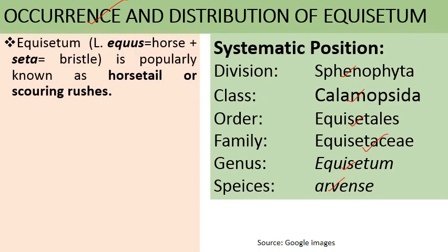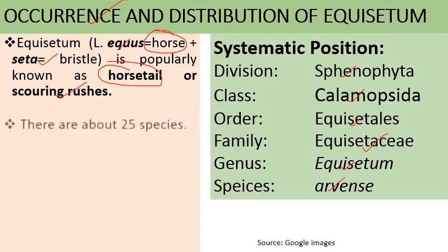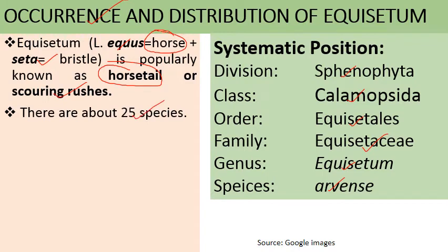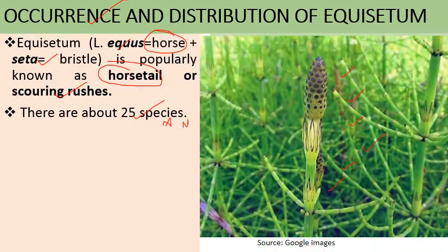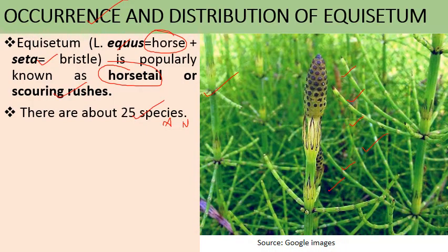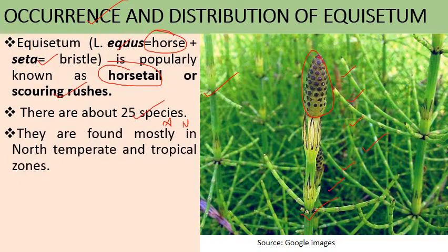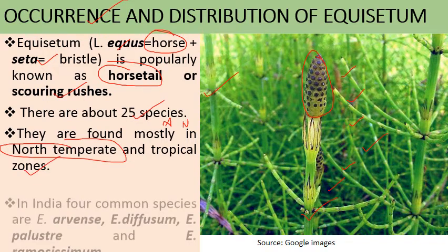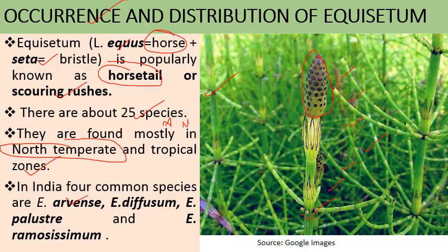Regarding its etymology, the name Equisetum is derived from the Latin word 'equis' meaning horse and 'citta' meaning bristle, which is why it is popularly known as horsetail fern or scouring rushes. There are about 25 species distributed throughout the world, except Australia and New Zealand. They are found mostly in north temperate and tropical zones. The four species found in India are Equisetum arvense, Equisetum diffusum, Equisetum palustre, and Equisetum ramosissimum.